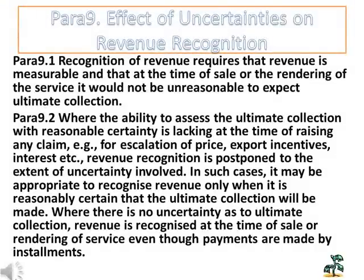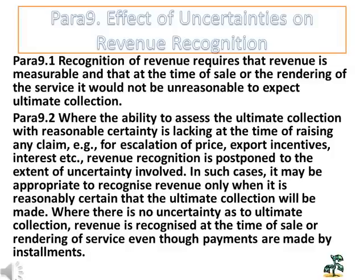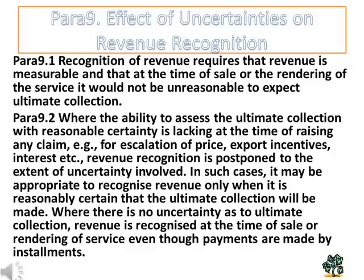Effect of Uncertainties on Revenue Recognition — Para 9.1: Recognition of revenue requires that revenue is measurable and that at the time of sale or the rendering of the service it would not be unreasonable to expect ultimate collection. Para 9.2: Where the ability to assess the collection with reasonable certainty is lacking at the time of raising any claim, e.g. for escalation of price, export incentives, interest, etc., revenue recognition is postponed to the extent of uncertainty involved. In such cases, it may be appropriate to recognize revenue only when it is reasonably certain that the ultimate collection will be made. Where there is no uncertainty as to ultimate collection, revenue is recognized at the time of sale or rendering of service, even though payments are made by installments.